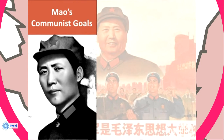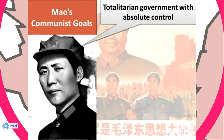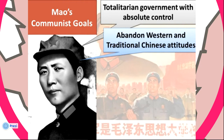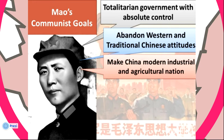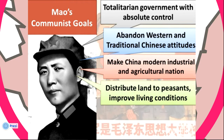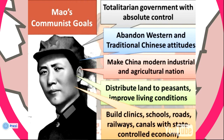When Mao Zedong took over Communist China, he had several goals: to make a totalitarian government with absolute control; to abandon Western and traditional Chinese attitudes; to make China a modern industrial and agricultural nation; to distribute land to peasants and improve living conditions; and to build clinics, schools, roads, railways, and canals — all by having the government control the economy.